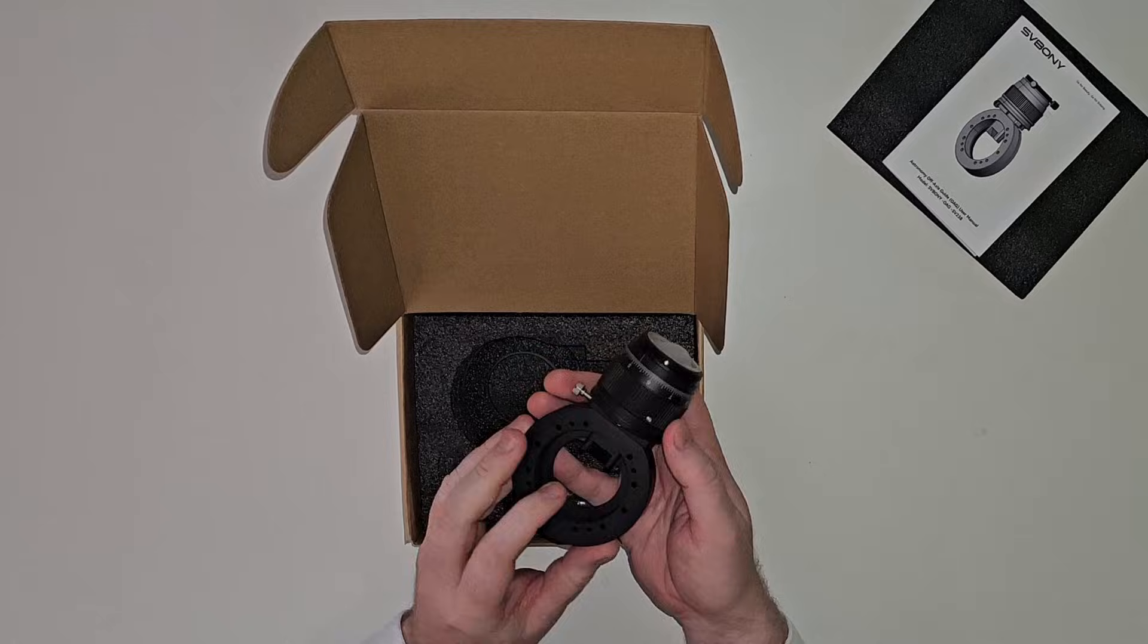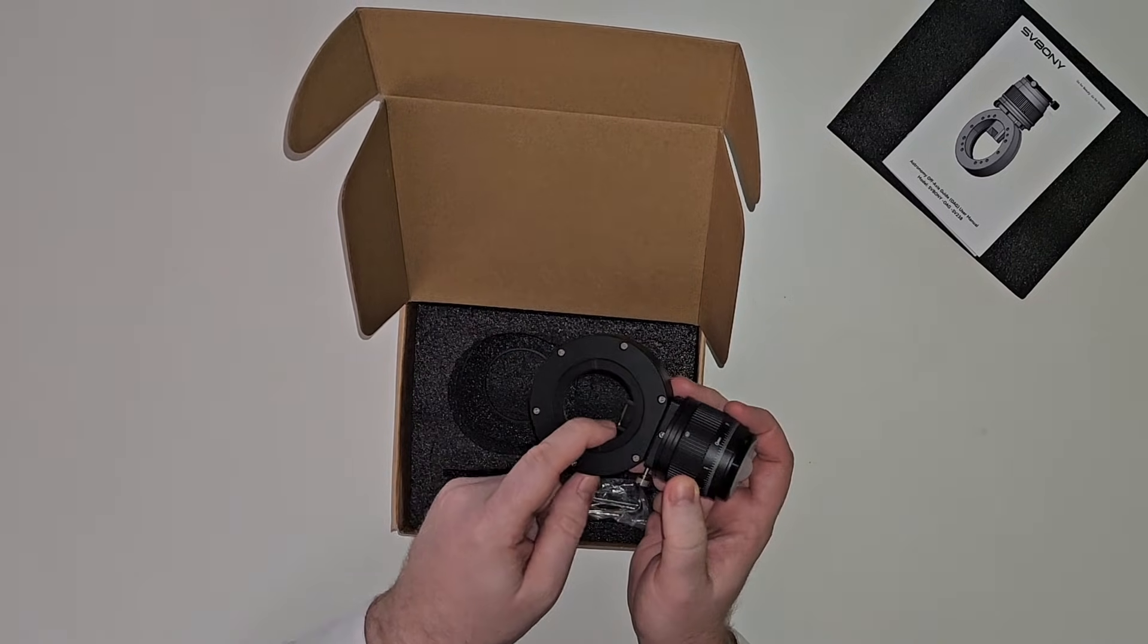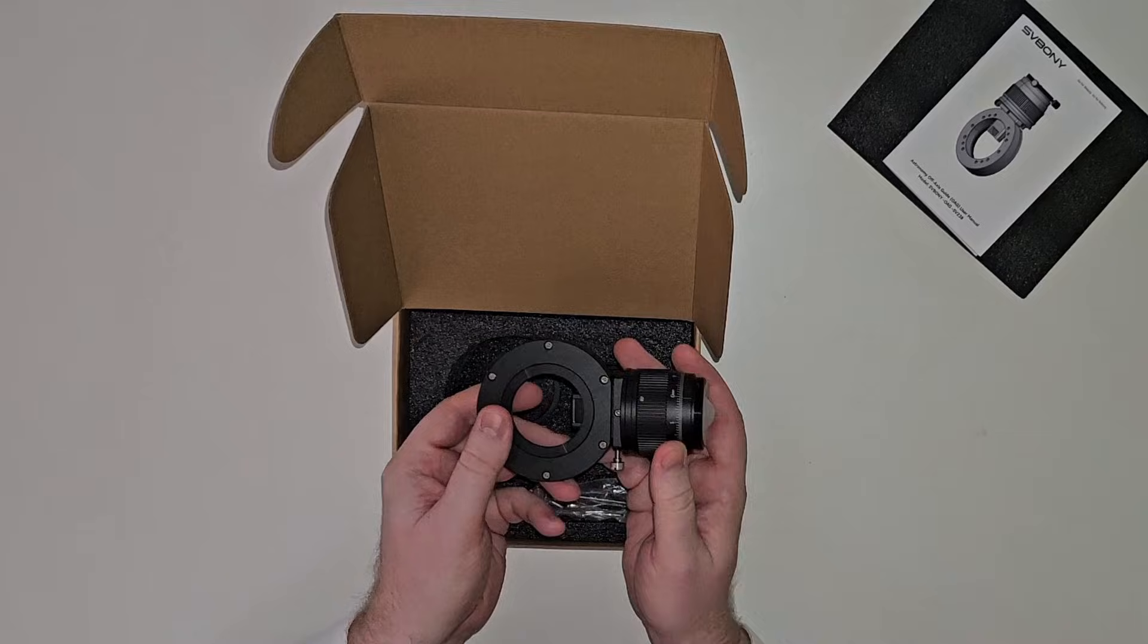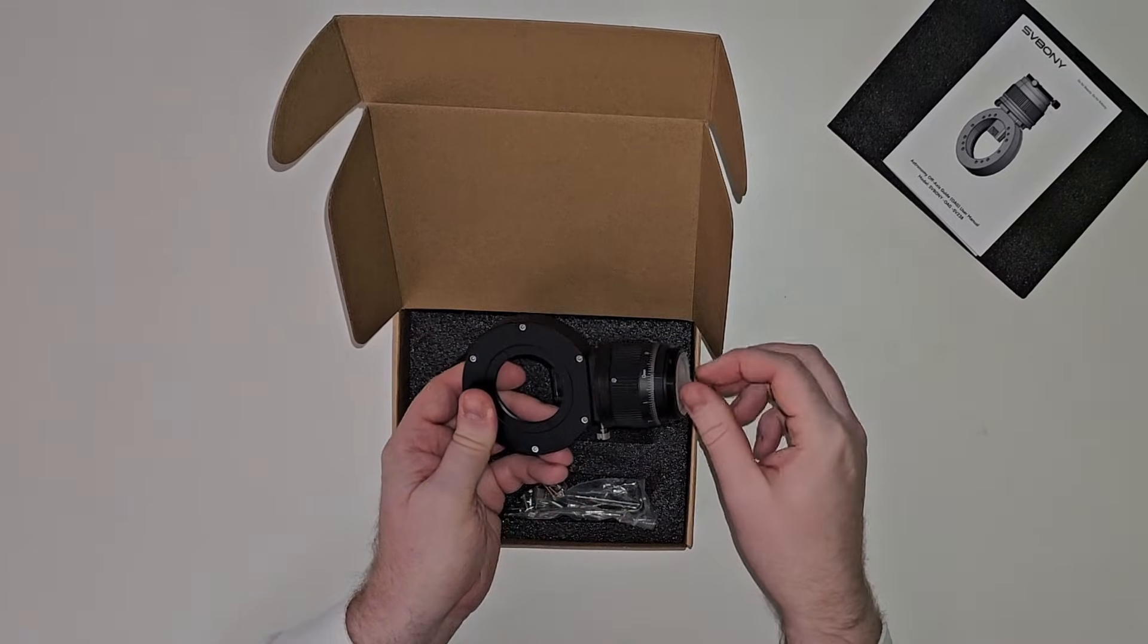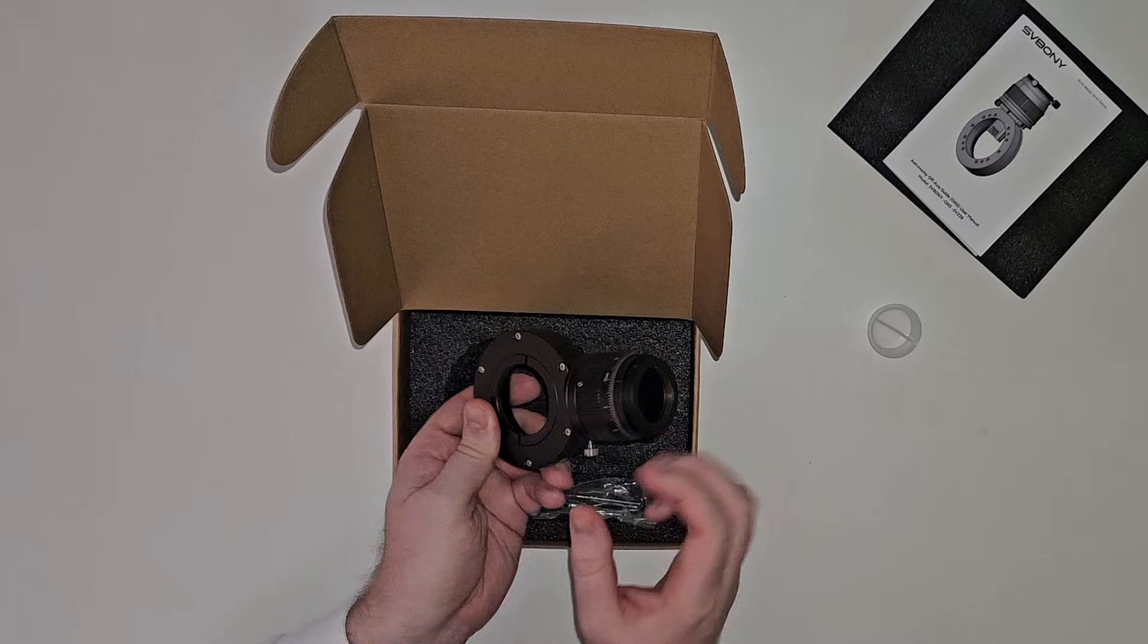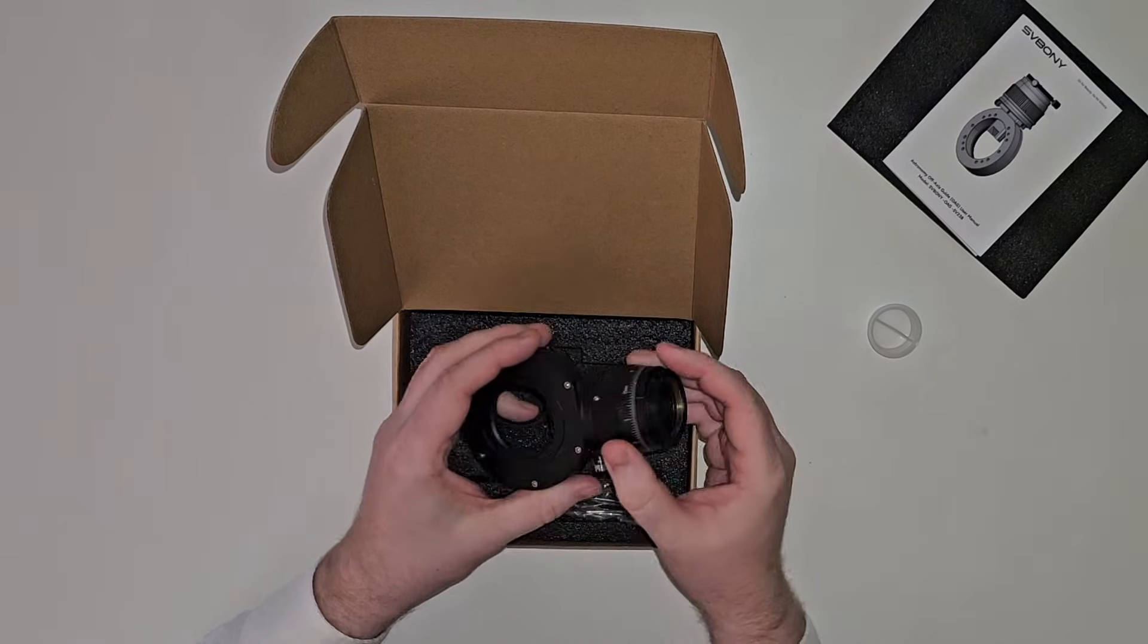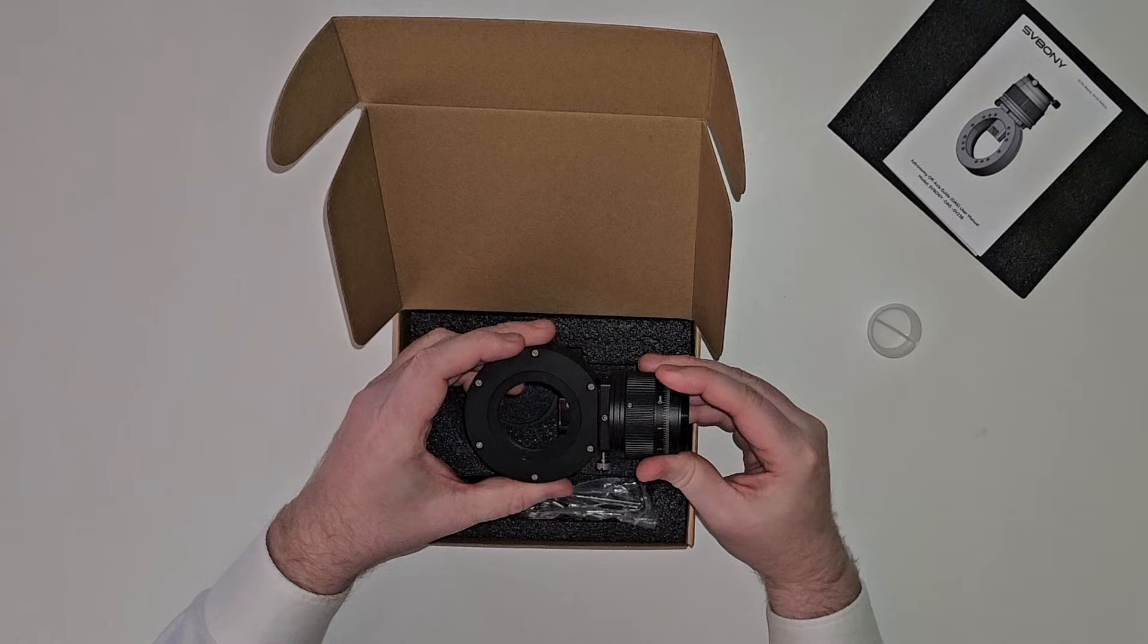So, if you don't know what an off-axis guide is, the idea is that there's a prism sitting here, and it takes light from your image circle on your telescope, just the normal light that goes through the telescope, it comes up here, and then you put your guide camera here, so you use your main telescope as a guide scope, basically.